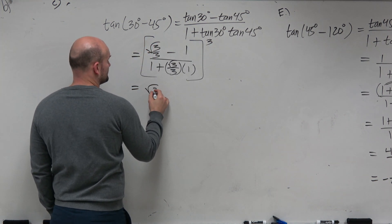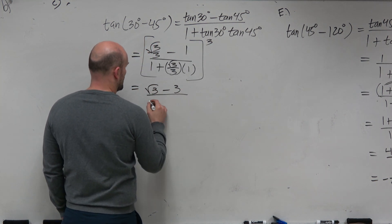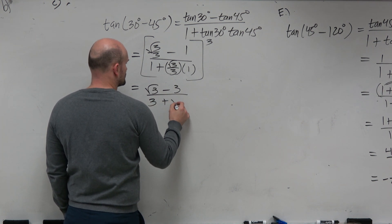Therefore, you get square root of 3 minus 3 all over 3 plus square root of 3.